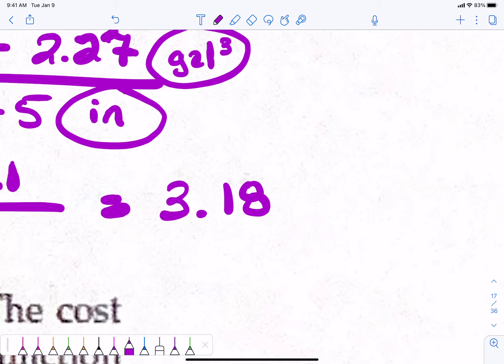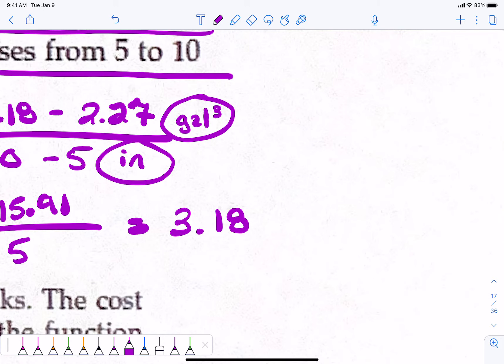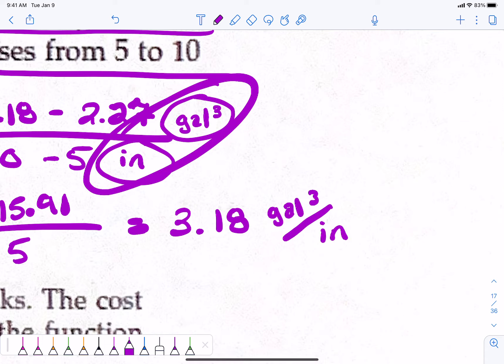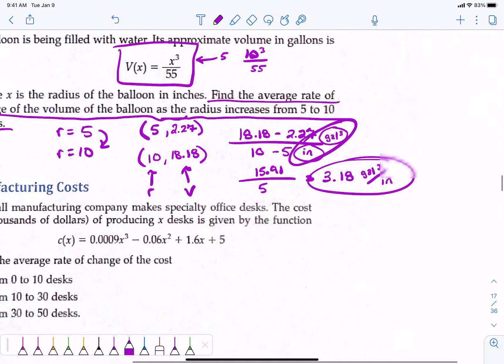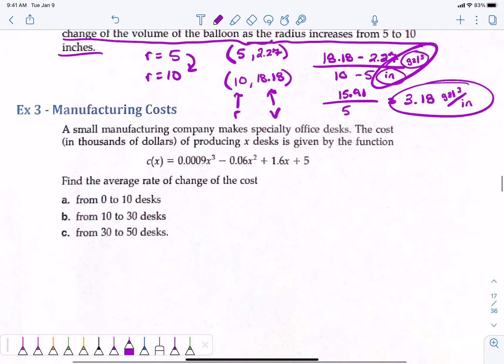So, the volume is increasing at a rate of 3.18 cubic gallons per inch. We just literally put that over top of each other. Gallons cubed per inch. It's increasing at a rate of for every inch that increases 3.18 cubic gallons is the increase. For every one inch it gets larger. All right. Moving on.